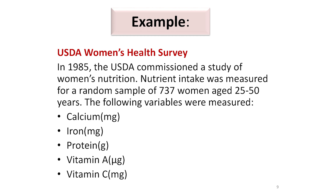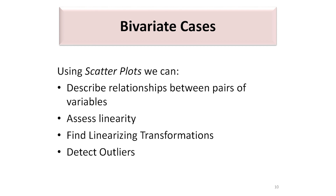Let us look at an example: the USDA Women's Health Survey. In 1985, the USDA commissioned a study of women's nutrition. Nutrient intake was measured for a random sample of 737 women between ages 25 and 50. The variables measured were intake of calcium, iron, protein, vitamin A, and vitamin C. To study the relationship between any two of these five variables, we can use scatter plots, which describe relationships between pairs of variables and check whether a linear relationship is appropriate.